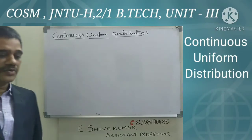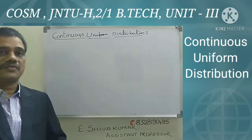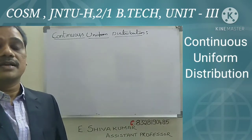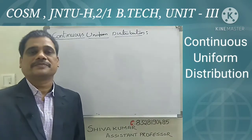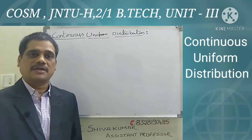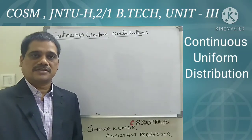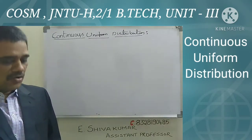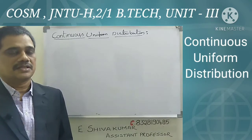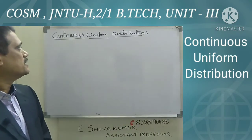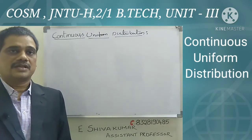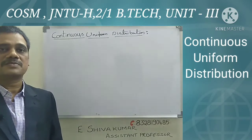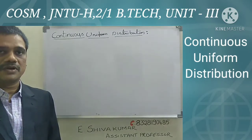In this video I am going to explain about the continuous uniform distribution. Previously we discussed discrete probability distributions — binomial distribution, Poisson distribution, and geometric distribution. Now coming to the continuous probability distribution, this is the first distribution, called the continuous uniform distribution. In statistics, this is the simplest continuous probability distribution.